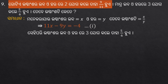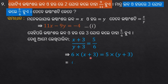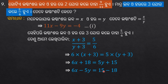According to the question, the second condition gives us 6 multiplied by x plus 3 is equal to 5 multiplied by y plus 3. Expanding: 6x plus 18 is equal to 5y plus 15. Rearranging, 6x minus 5y is equal to minus 3. This is equation 2.